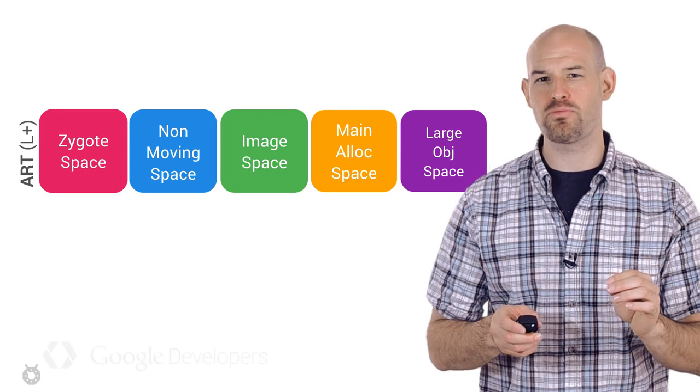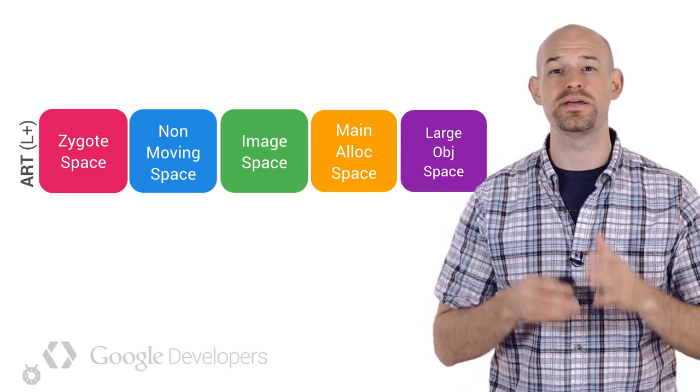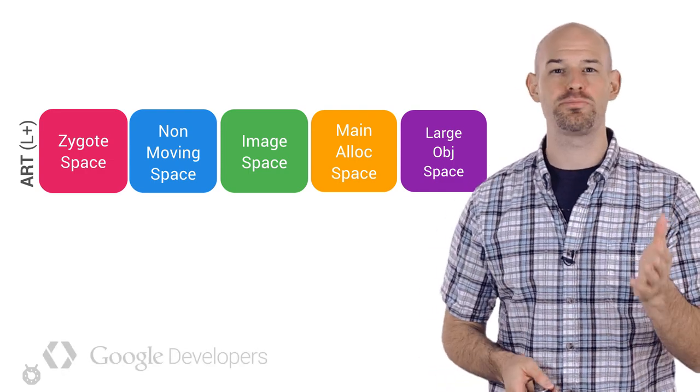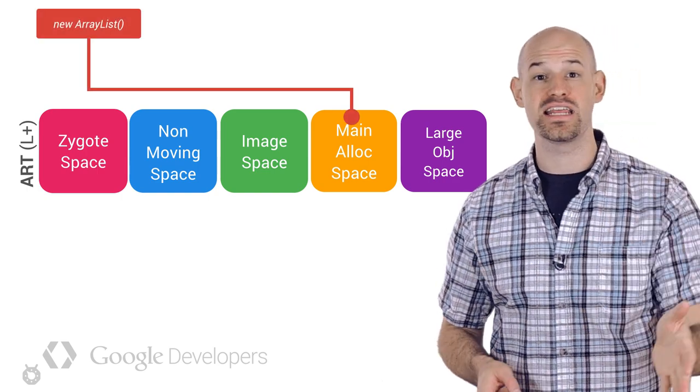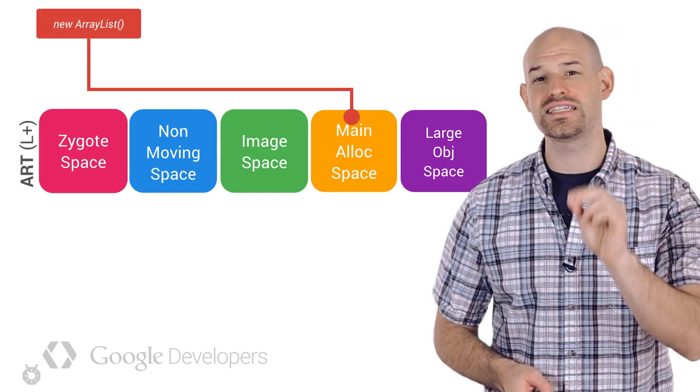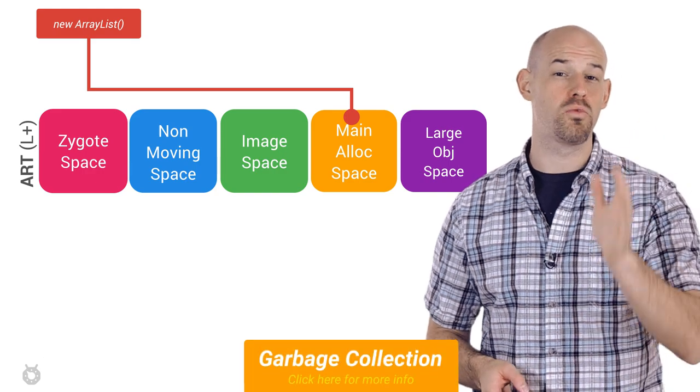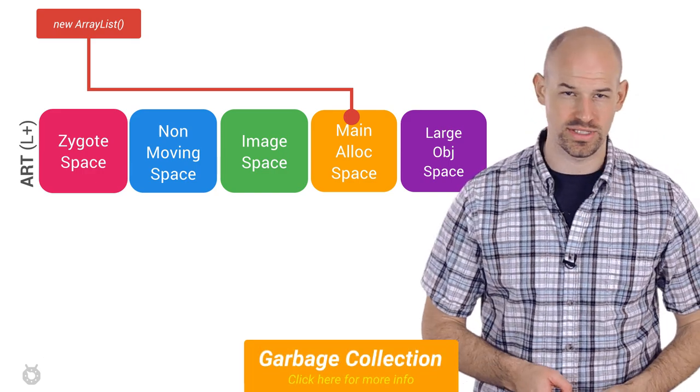You have to remember that the memory heap in Android is segmented up into separate spaces based upon what type of allocation is occurring. And as allocations in any of the spaces grow, a GC event can be kicked off in order to make more room for future allocations.